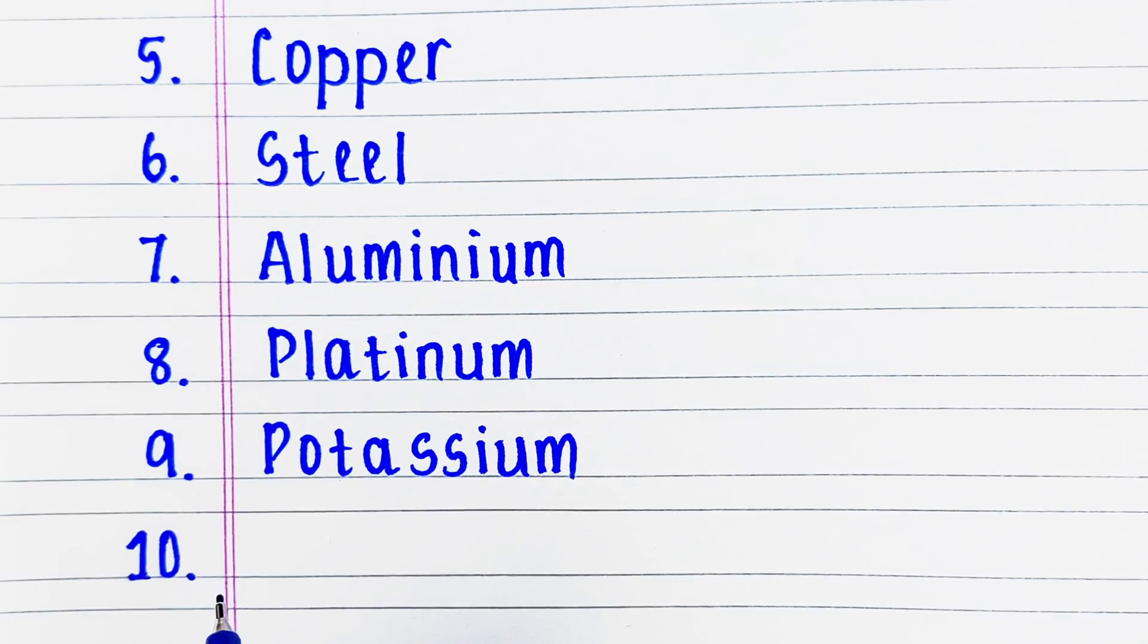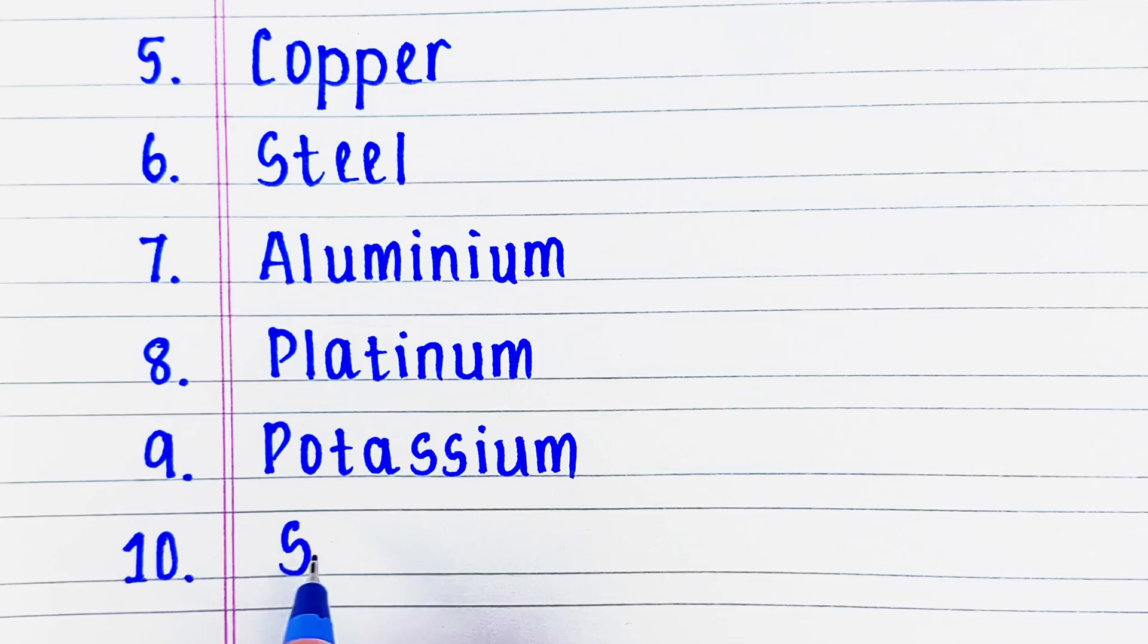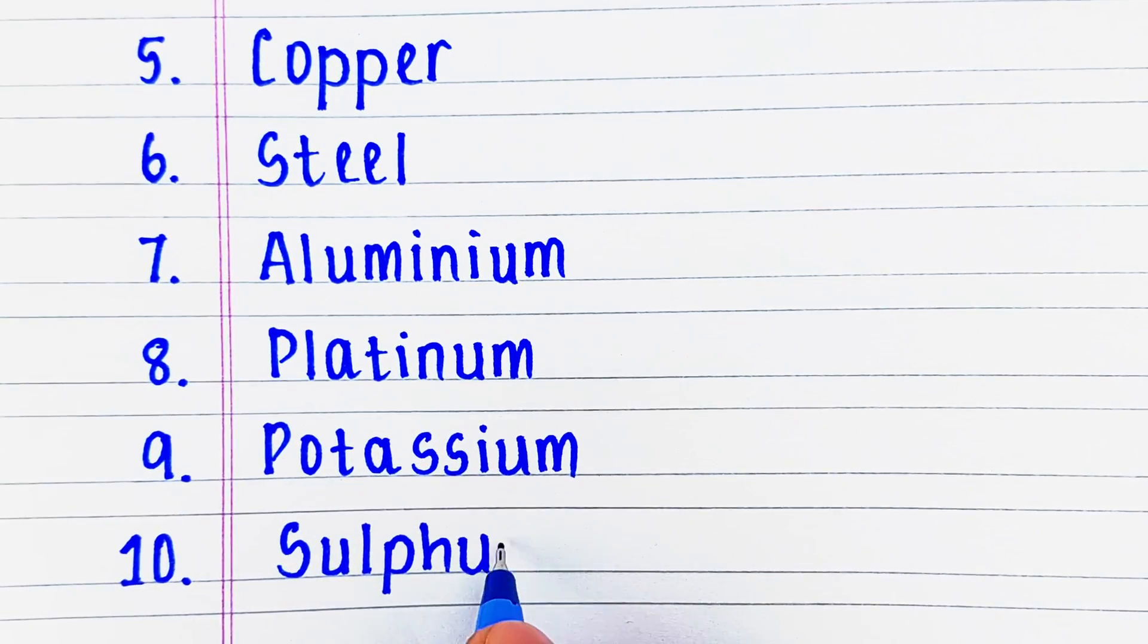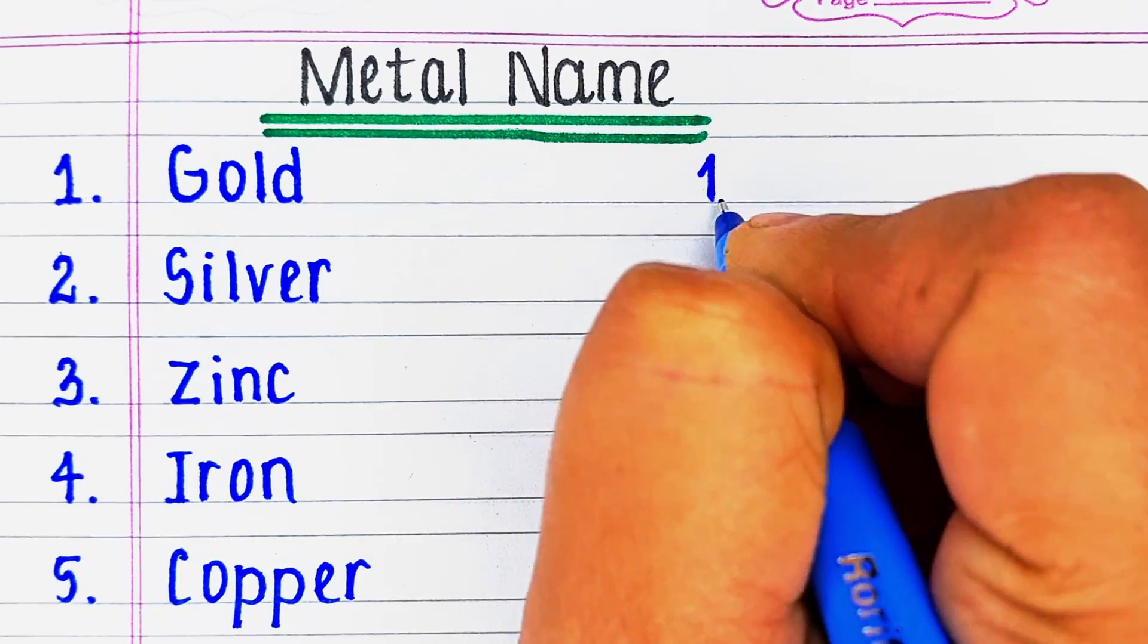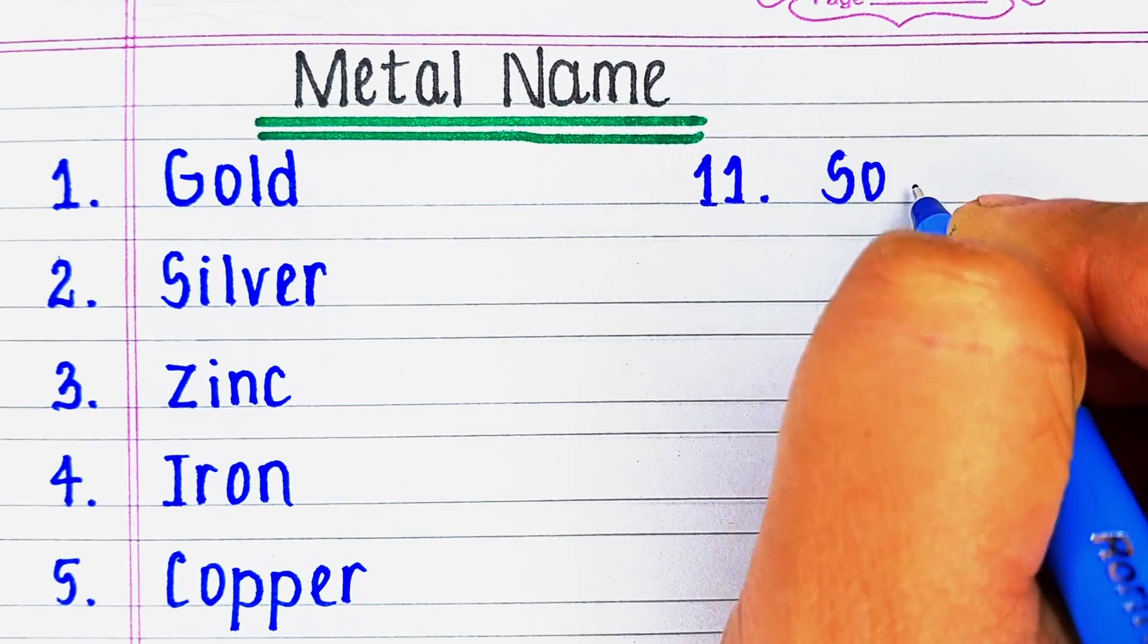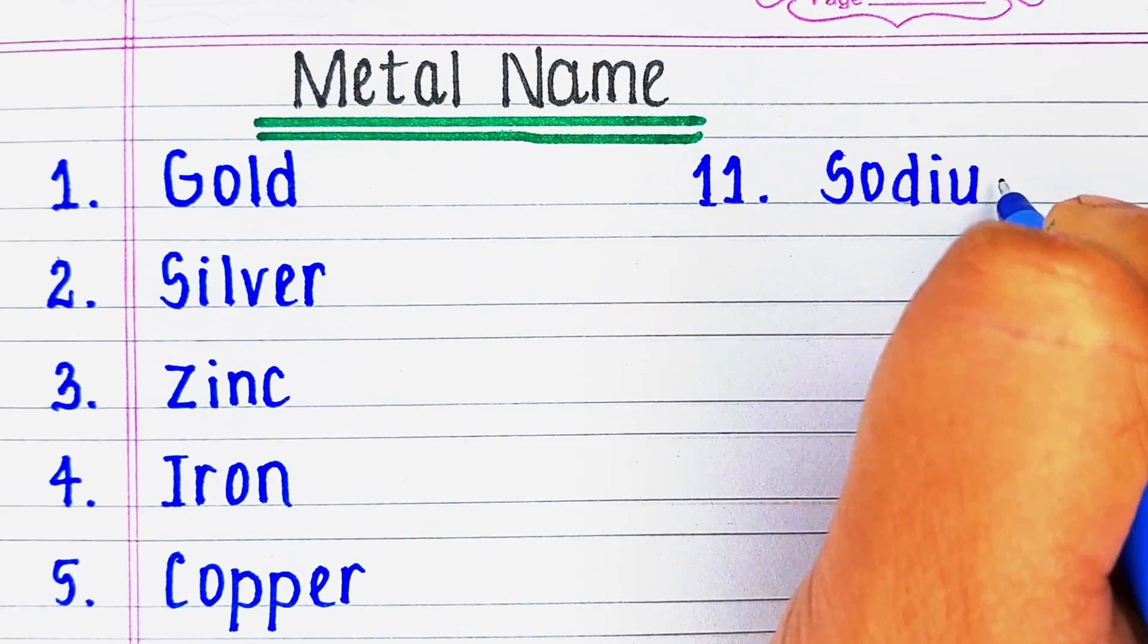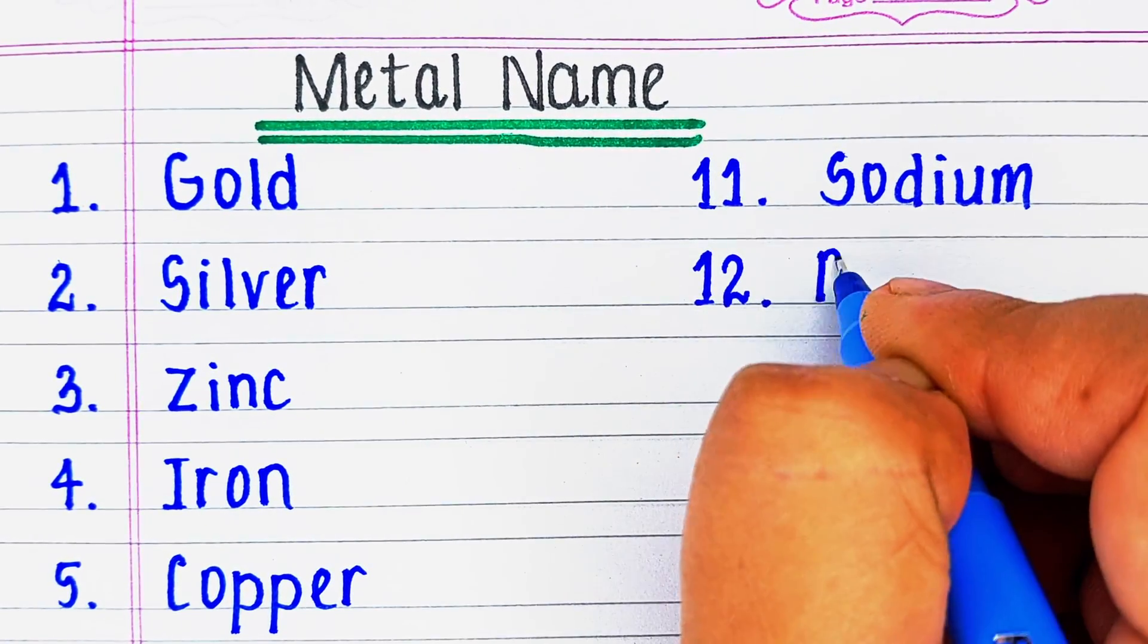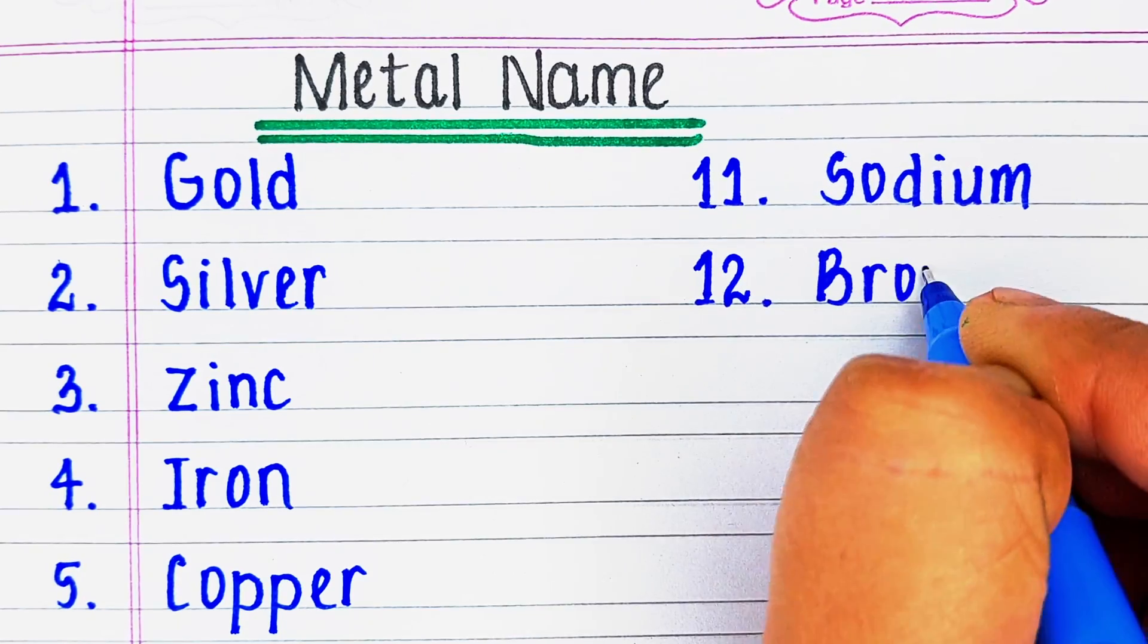On number ten, we have S-U-L-P-H-U-R, sulphur. Next is S-O-D-I-U-M, sodium. Next metal is B-R-O-N-Z-E, bronze.